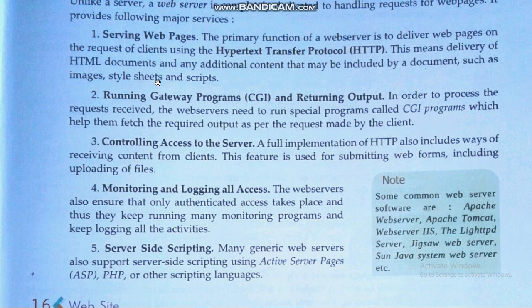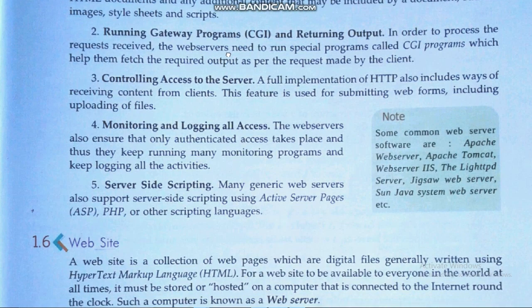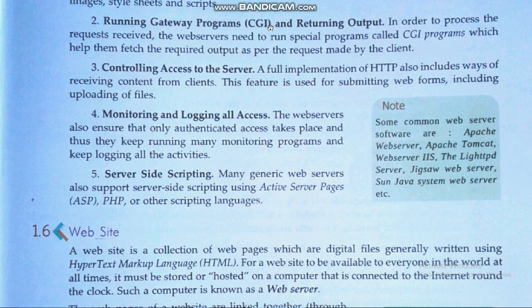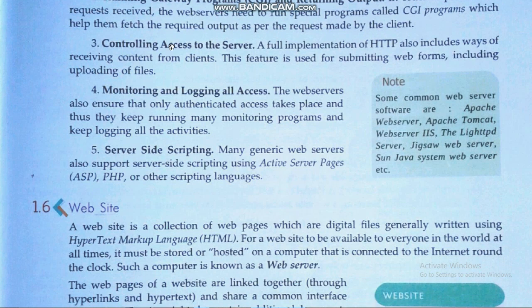This means delivery of HTML documents and any additional content that may be included in the document, such as images, style sheets, and scripts. Second is running gateway programs — CGI (Common Gateway Interface) — and returning output. In order to process requests received, web servers run special programs called CGI programs, which help them fetch the required output as per the request made by the client.